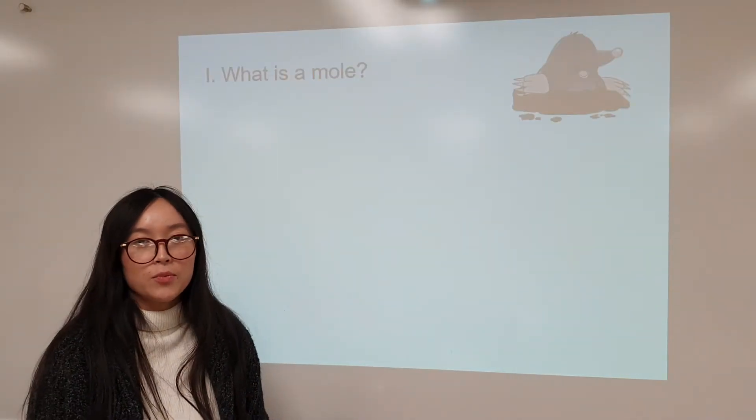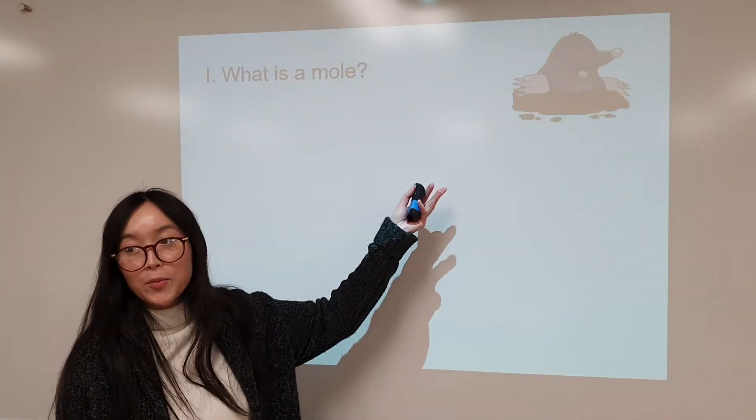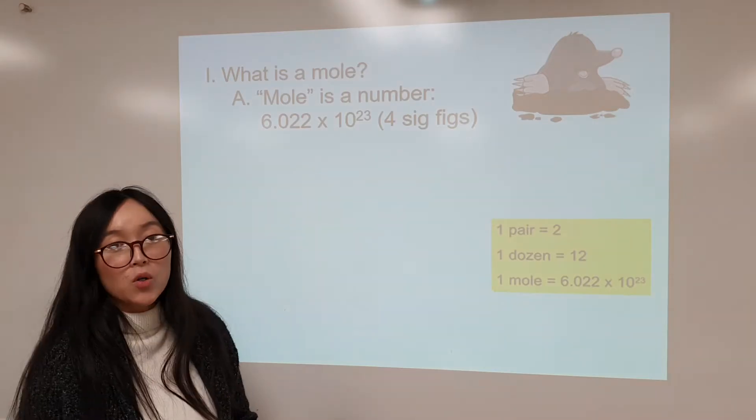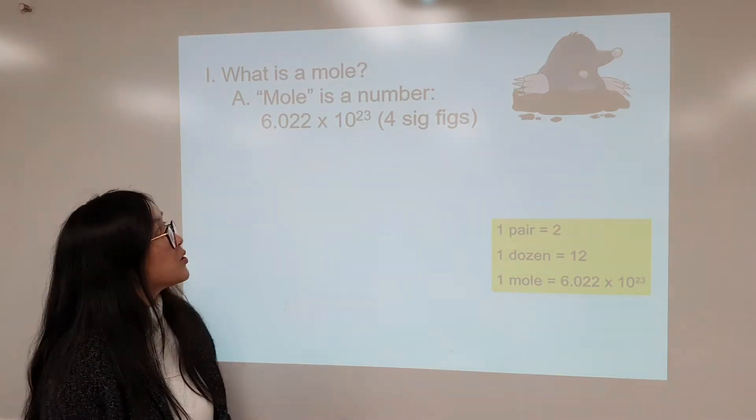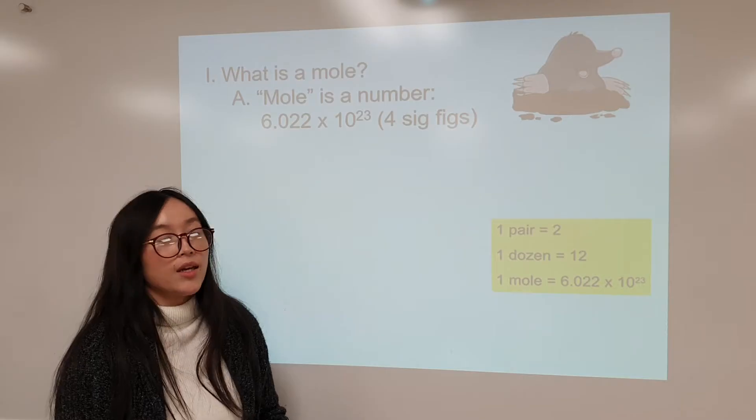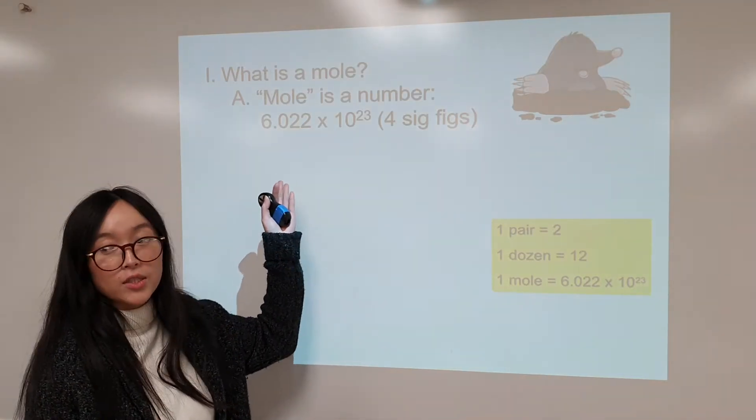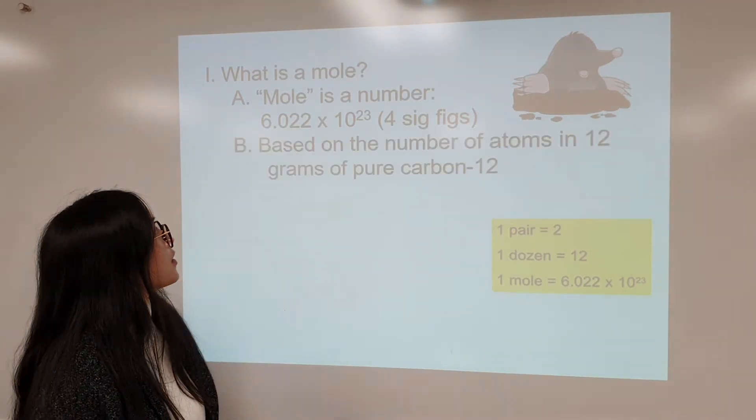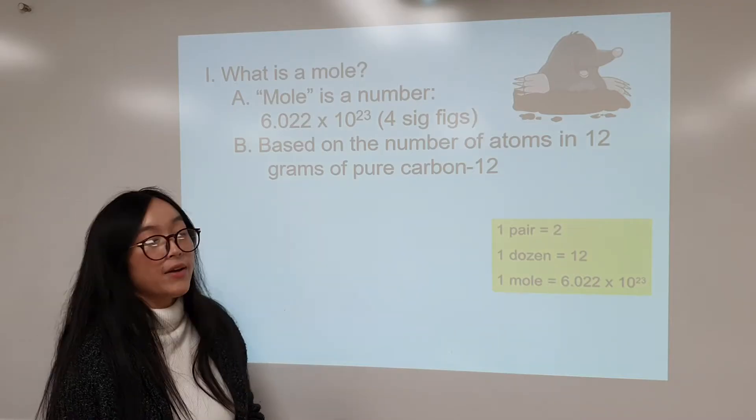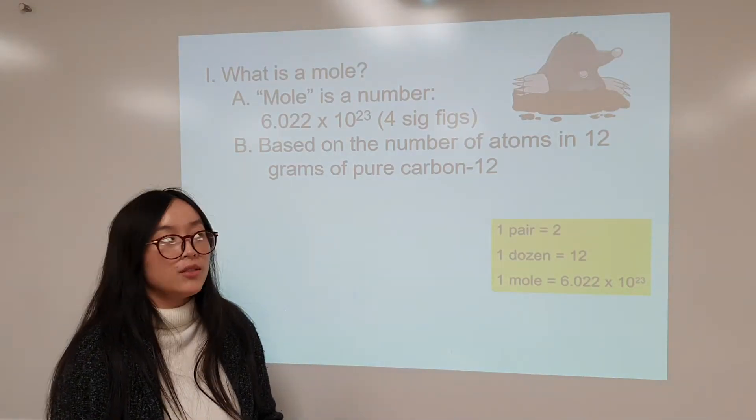So what is a mole? It's not the animal, but in science a mole is a number. It is 6.022 times 10 to the 23rd, and we rounded it to 4 sig figs. And it's based on the number of atoms in 12 grams of pure carbon.